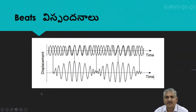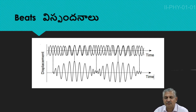Now we are going to discuss about beats. When two waves of nearly the same frequencies are propagating in the same direction, by superposition, that is by interference, we get beats — that is, constructive and destructive interferences produce beats.